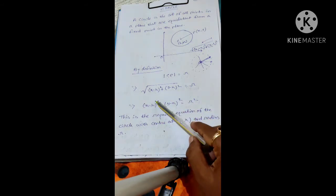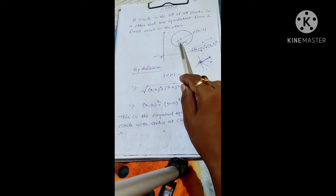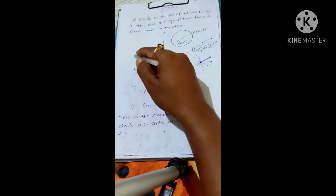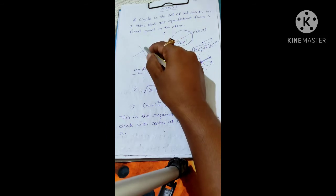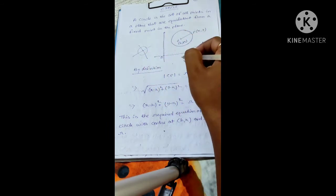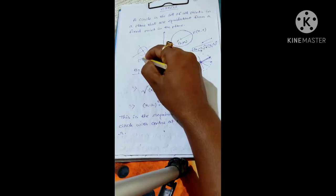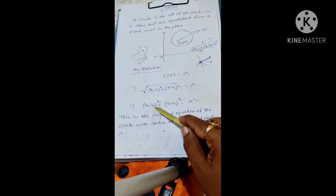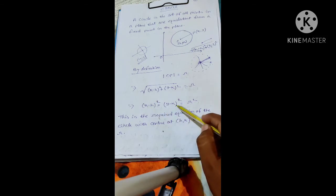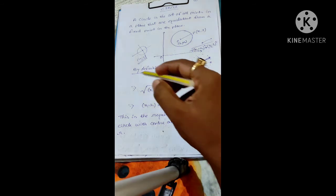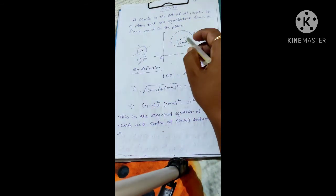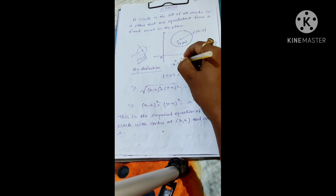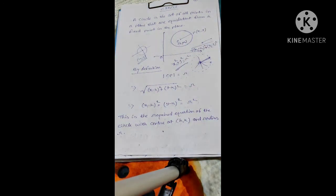But if the center lies at the origin, then what will be the equation of the circle? If the origin itself is the center, then h and k will become 0, 0. So substituting, x minus 0 squared is just x squared, and y minus 0 squared is just y squared, equal to r squared. That means if the center of the circle lies at the origin, the equation of the circle will be x squared plus y squared equals r squared.